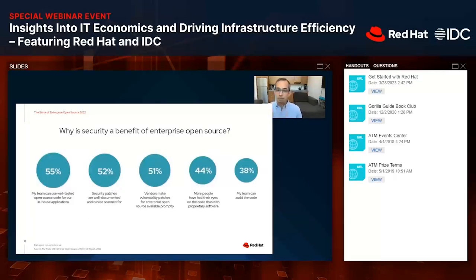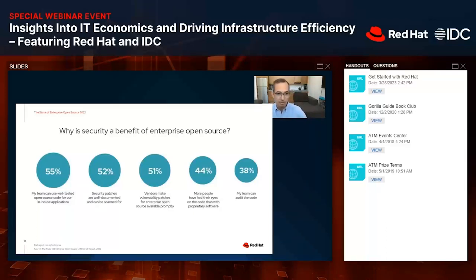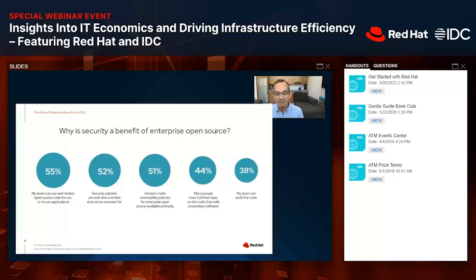Why is open source so relevant to security strategies? Summarizing the results: one dimension is the kinds of tools available in open source — well-tested code for in-house applications, and security patches that are well-documented and scannable. The other dimension is the nature of open source itself: 44% of respondents believe that 'many eyes make all bugs shallow' — so it's not just the kinds of tools open source produces, but the way in which open source is built that makes people feel more secure.